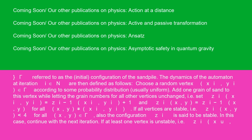The dynamics of the automaton at iteration i ∈ ℕ are then defined as follows. Choose a random vertex (Xᵢ, Yᵢ) ∈ gamma according to some probability distribution, usually uniform. Add one grain of sand to this vertex while letting the grain numbers for all other vertices unchanged, i.e., set Zᵢ(Xᵢ, Yᵢ) = Zᵢ₋₁(Xᵢ, Yᵢ) + 1, and Zᵢ(x, y) = Zᵢ₋₁(x, y) for all (x, y) ≠ (Xᵢ, Yᵢ). If all vertices are stable, i.e., Zᵢ(x, y) for all (x, y) ∈ gamma, also the configuration Zᵢ is said to be stable. In this case, continue with the next iteration.